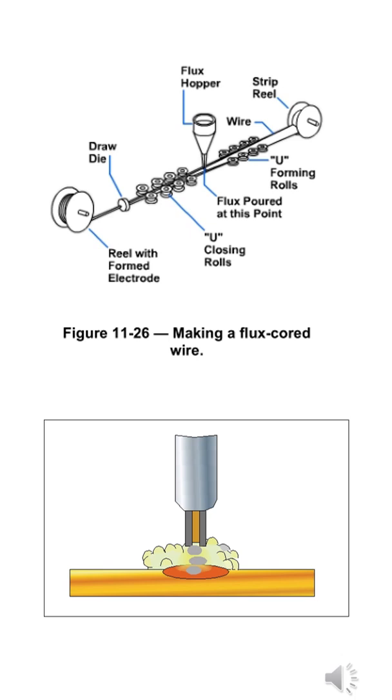The flux-cored electrode begins as a flat metal strip that is formed first into a U-shape. Flux and alloying elements are deposited into the U, and then the shape is closed into a tubular configuration by a series of forming roles.